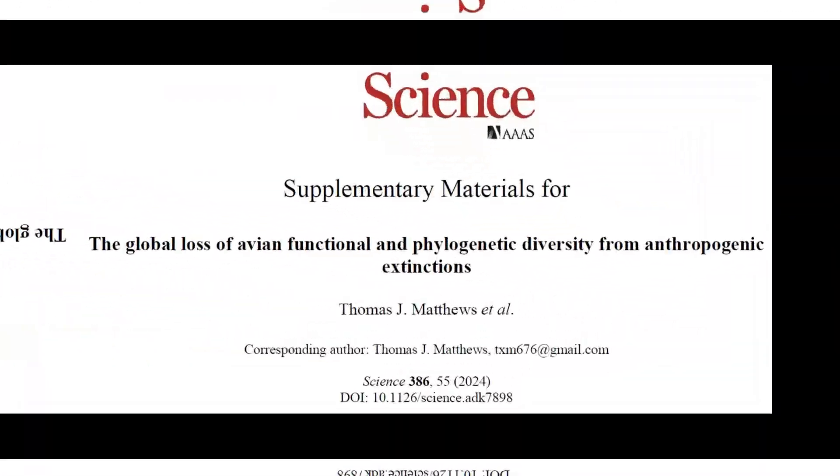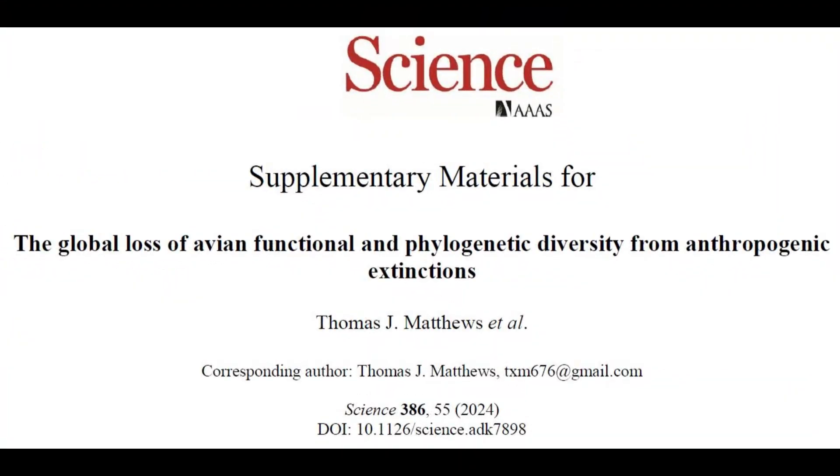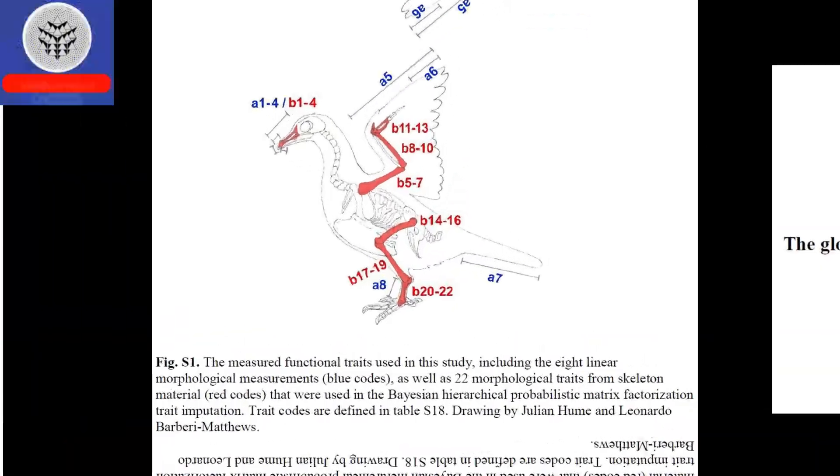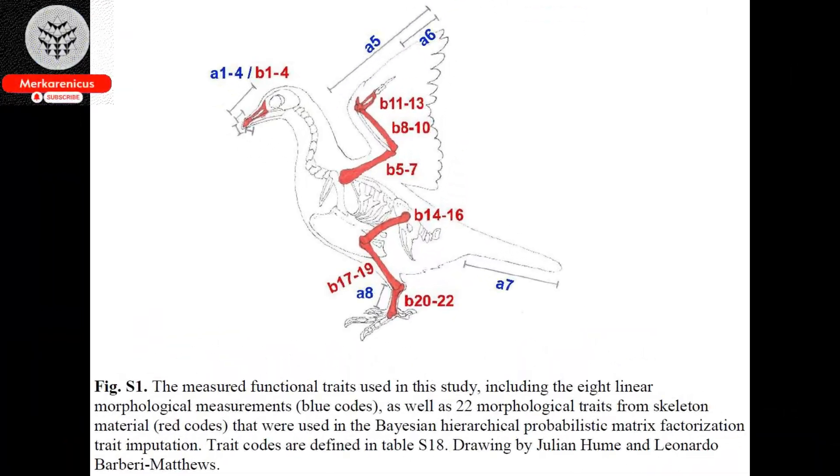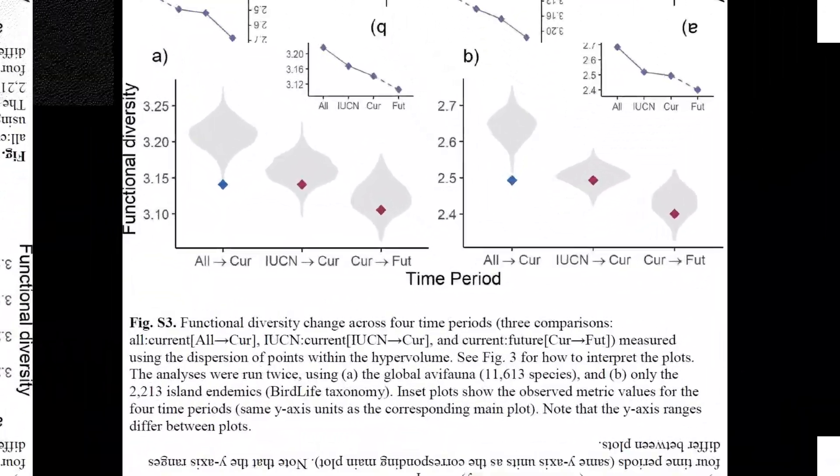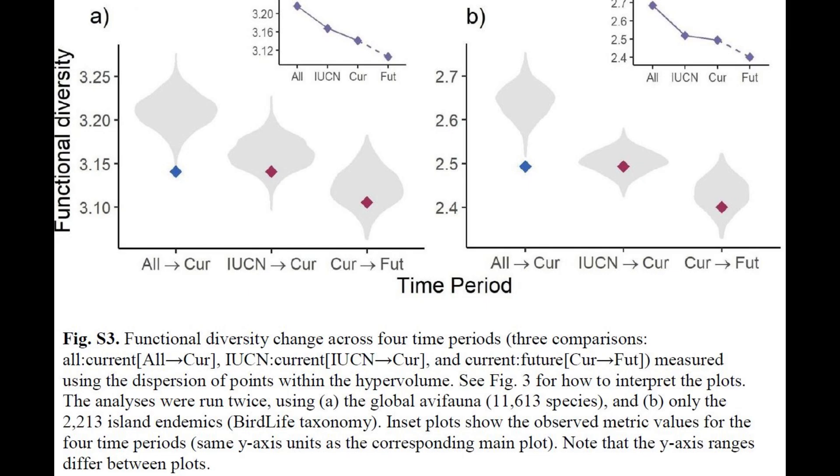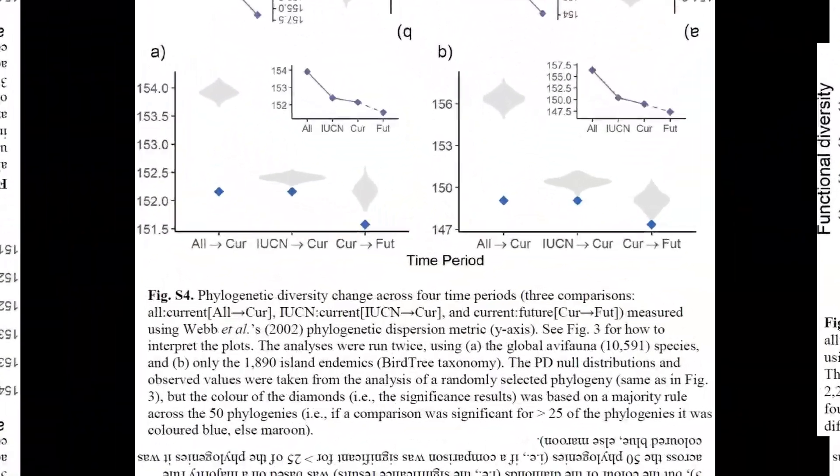Recent research conducted by the University of Birmingham underscores the critical ramifications of the current biodiversity crisis, and emphasizes the immediate necessity to recognize the ecological roles that are being forfeited due to extinction.